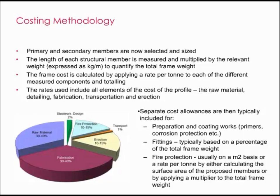For steelwork, the primary and secondary members will be sized and can be quantified by measuring the length of each member and multiplying it by the weight per meter, which should be provided by the structural engineer. For certain sections the weight per meter may not be apparent, so reference to standard steel tables will be necessary — for example, with angles, channels, and hollow sections. A rate per tonne is applied to the overall weight, which will include the cost of raw material, detailing, fabrication, transport, and erection. The rate per tonne for standard members will be reasonably consistent across a project, although angles, channels, hollow sections, cell beams, and built-up members, as well as fittings, will command a higher rate. Separate cost allowances are typically included for preparation and coating works — for example, primers and corrosion protection. Fittings would typically be based on a percentage of total frame weight, and fire protection usually on a meter squared basis or a rate per tonne by either calculating the surface area of the proposed members or by applying a multiplier to the total frame weight.